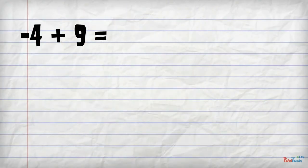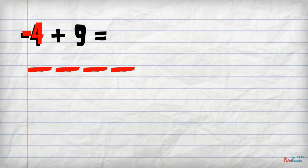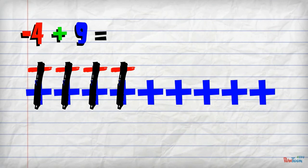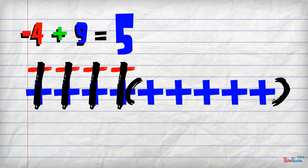Now let's put all the pieces together. Let's try the problem negative 4 plus 9. First, we model the situation with our tiles: start with 4 negative tiles, then add on 9 positive tiles. Next, cross out any zero pairs. We then circle the tiles that remain, which give us our answer: 5 positive tiles, or positive 5.